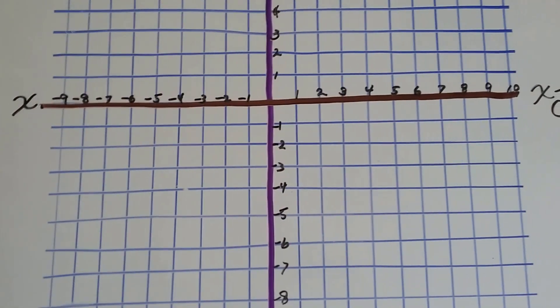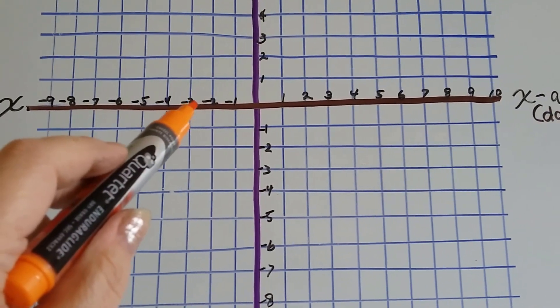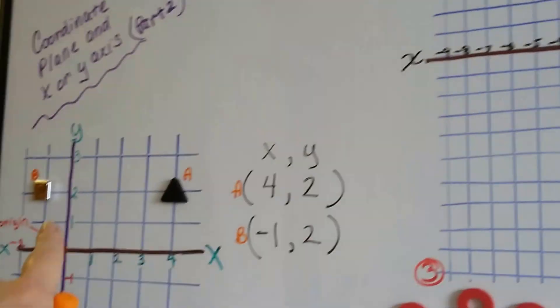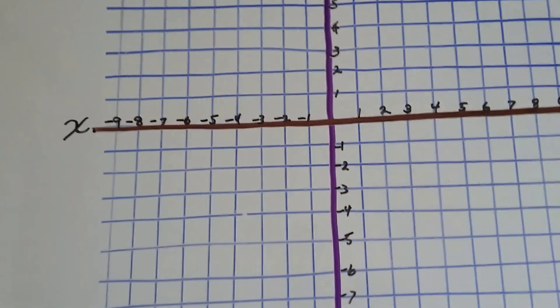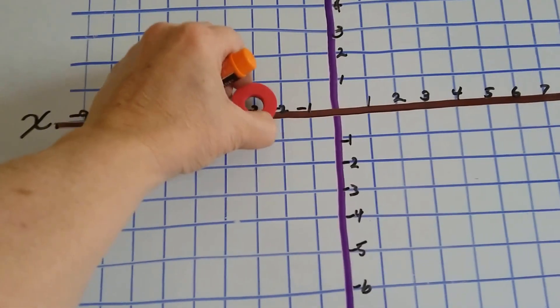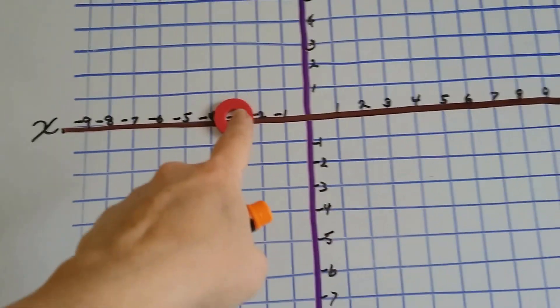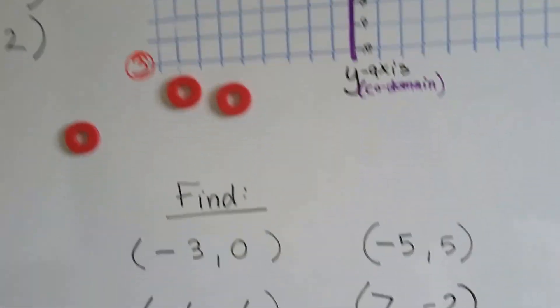We're going to do x first. So, it's negative 3, and then 0 is the origin. Remember? It's the very, very center. So, negative 3, 0 is going to be right here. Right on the line.